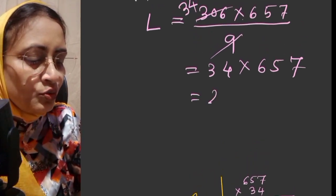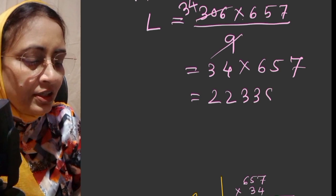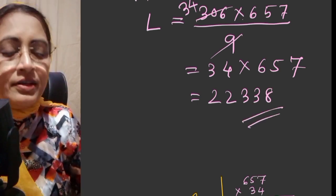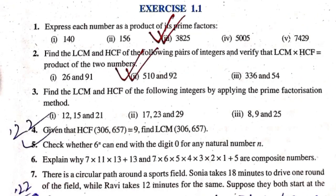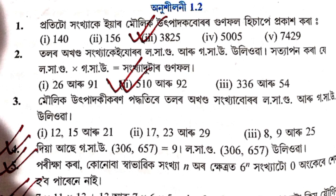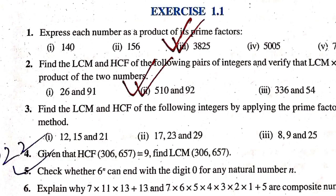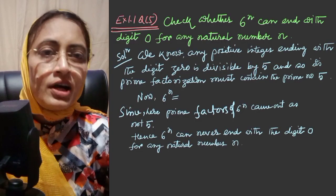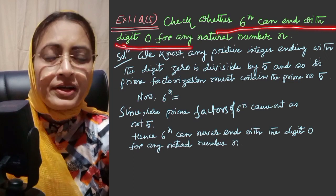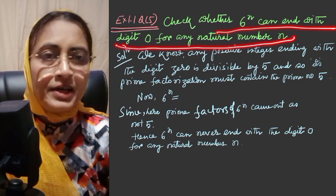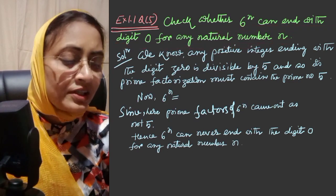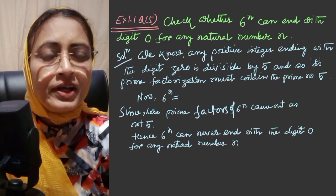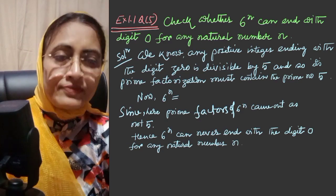Question number 5: Check whether 6 to the power n can end with 0 for any natural number n. Here we know that if the unit place is 0, then this number is fully divisible by 5. We will see whether 5 is a factor of 6 to the power n.